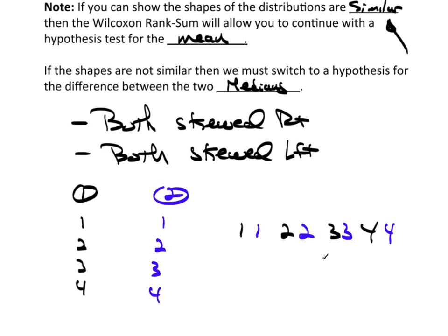then these ranks are going to be very similar to each other. Now, on the other hand, if the distributions were separated, I may get something that looks like this. One, two, three, four, and perhaps one, two, three, four. Now, when I rank this,